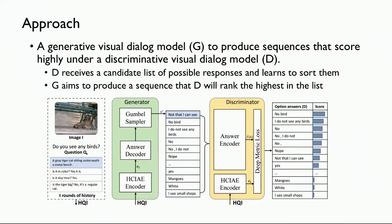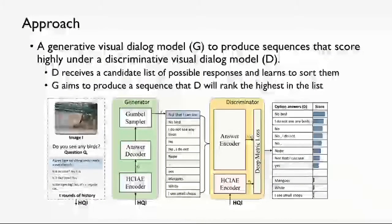This paper proposes a generative visual dialogue model G to produce sentences that score highly under a discriminative visual dialogue model. The discriminator receives a candidate list of possible responses and learns to sort them. The generator aims to produce a sequence that D will rank the highest. Given an image, a question, and the history of questions, the generator encodes this into a vector and generates an answer.